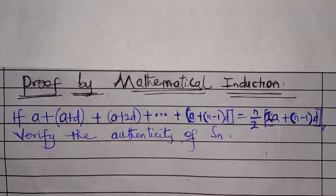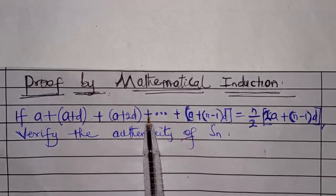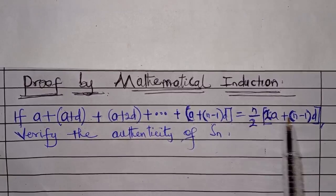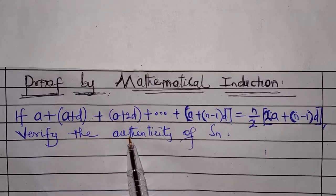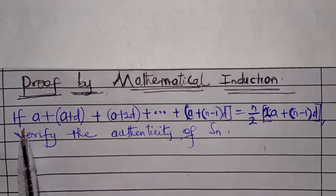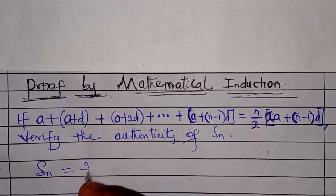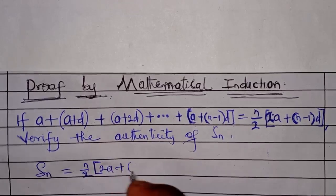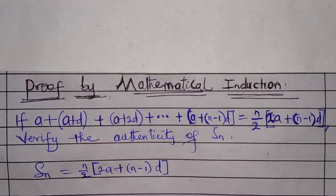Here is a question on mathematical induction. If A plus A plus D plus A plus 2D plus A plus N minus 1 times D equals N over 2 in brackets 2A plus N minus 1 times D, we have to verify the authenticity of S sub N. This is the sum of the first N terms of an arithmetic progression, so S_N equals N over 2 into 2A plus N minus 1 times D. We have to prove this by mathematical induction.